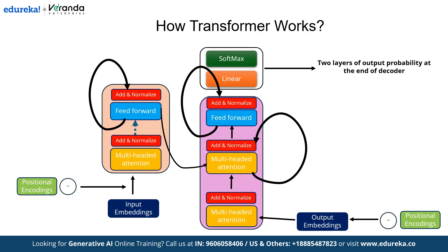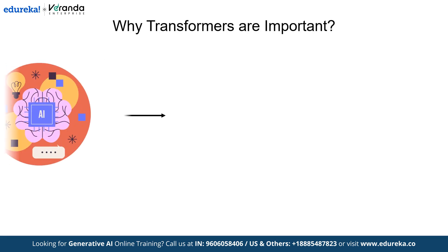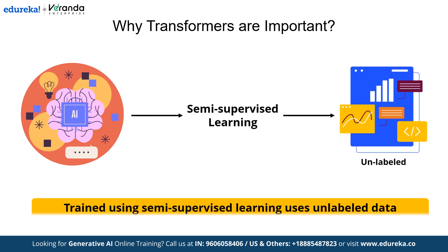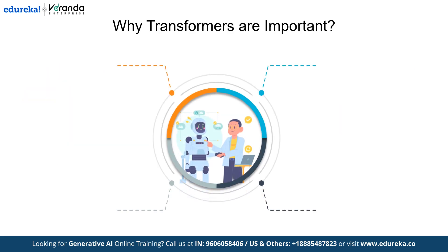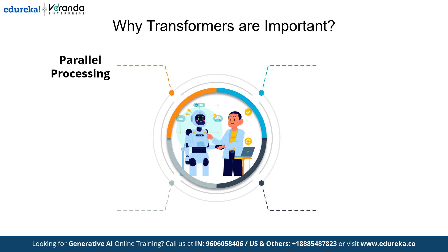Moving forward, let's discuss why transformers are important. Transformers are vital because they utilize semi-supervised learning — they are trained on massive unlabeled datasets, enabling them to generalize across a wide range of tasks. Unlike older models, transformers don't need to process data sequentially; their attention mechanisms allow them to focus on the most relevant context, which significantly speeds up training. Transformers also revolutionize data processing by allowing for parallel processing and significantly enhancing efficiency. The attention mechanism lies at the core of transformers, enabling the model to focus on the most relevant parts of the input sequence and improving accuracy and understanding of context.